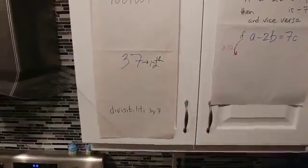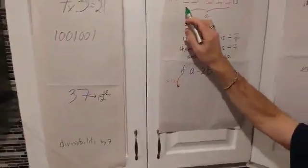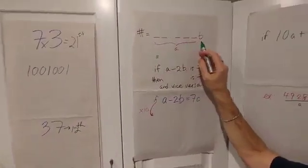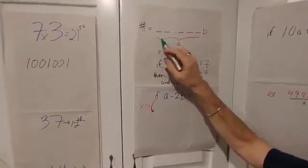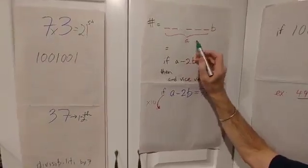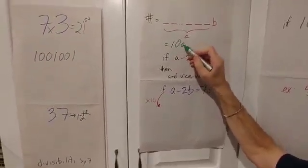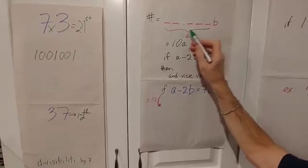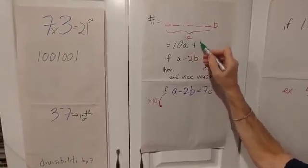So let's say you have any number with many digits, the last one being B, and we'll call all of these digits the number A. So the value of that number is 10 times A, because these have all been shifted over one, plus B.